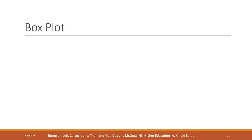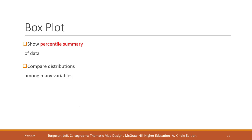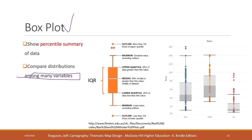The next commonly used visualization is called a box plot. A box plot can be used to compare the statistical distribution of multiple variables, and it can give us the percentile summary of the data. If you want to compare distribution among many variables, a box plot is the best choice.